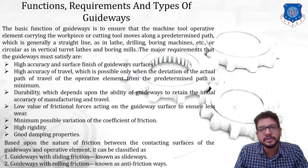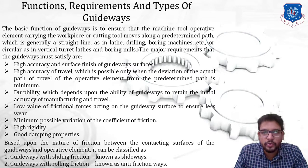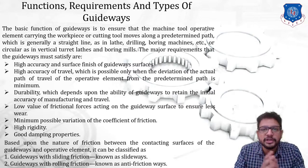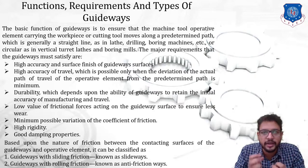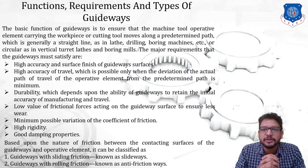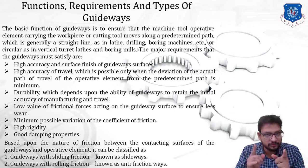In today's session we are going to see functions, requirements and types of guideways. The first question is: what is a guideway? As the name itself suggests, a guideway is going to guide the machine tool elements on a specified path — it provides direction to the elements. For example, a tool stroke or carriage can move on the guideways. The basic function of guideways is to ensure that the machine tool operative element, which carries a workpiece or a cutting tool, moves along a predetermined path, which is generally a straight line.